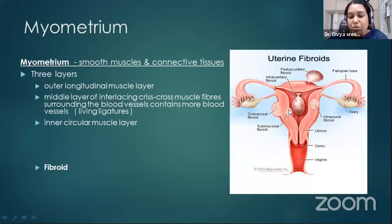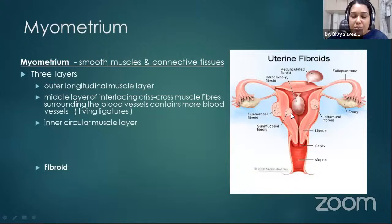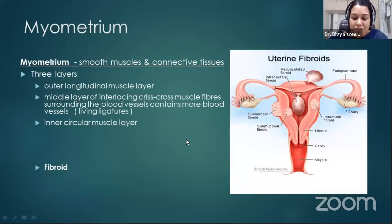Submucosal fibroids arise near the mucosal layer. Fibroids typically start as intramural — within the muscle belly. When they grow and push inward toward the mucosal layer, they become submucosal. If pushed outward, they become subserous. If pushed further out and covered by the peritoneal layer, they become pedunculated fibroids.